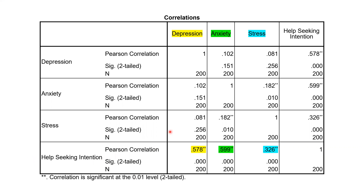For example, just like earlier, how do we determine if depression and help-seeking are related? We look for their intersection — they intersect at 0.578, just like earlier, and the p-value is less than 0.001. So we can say there is a significant positive relationship between depression and help-seeking.